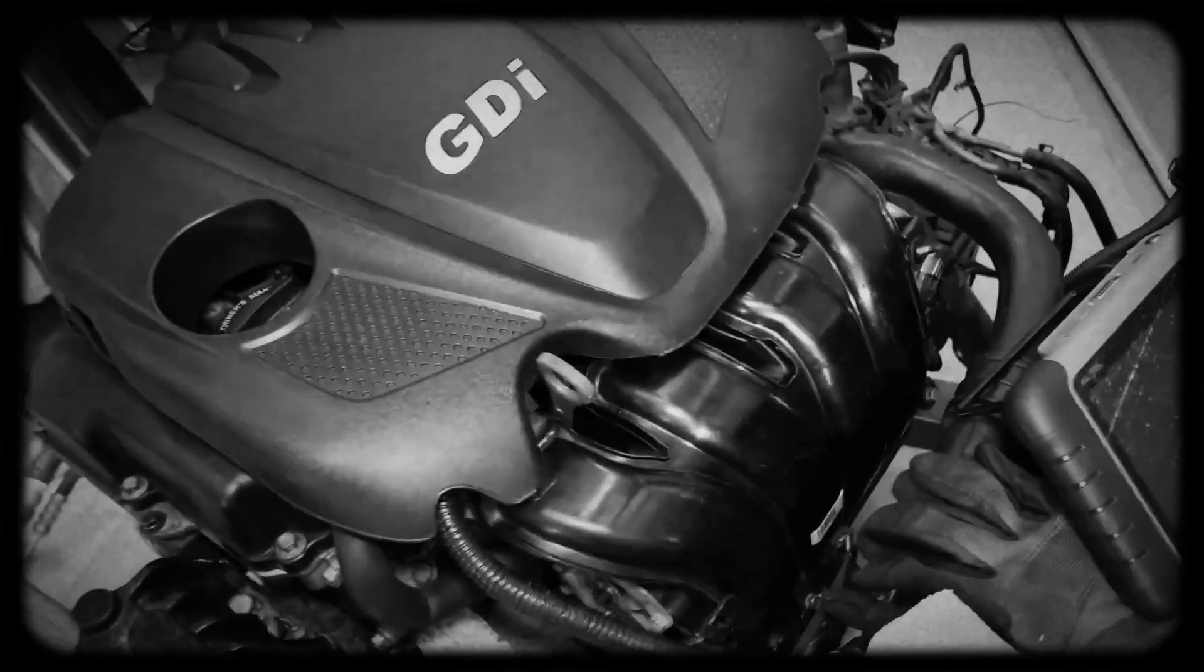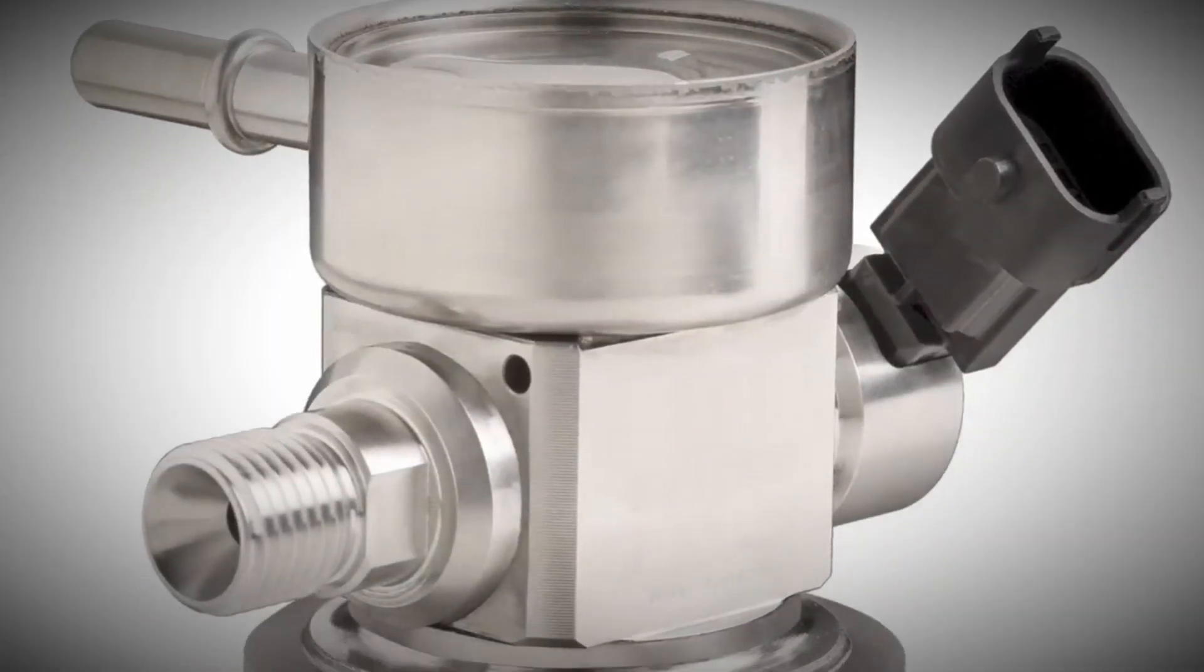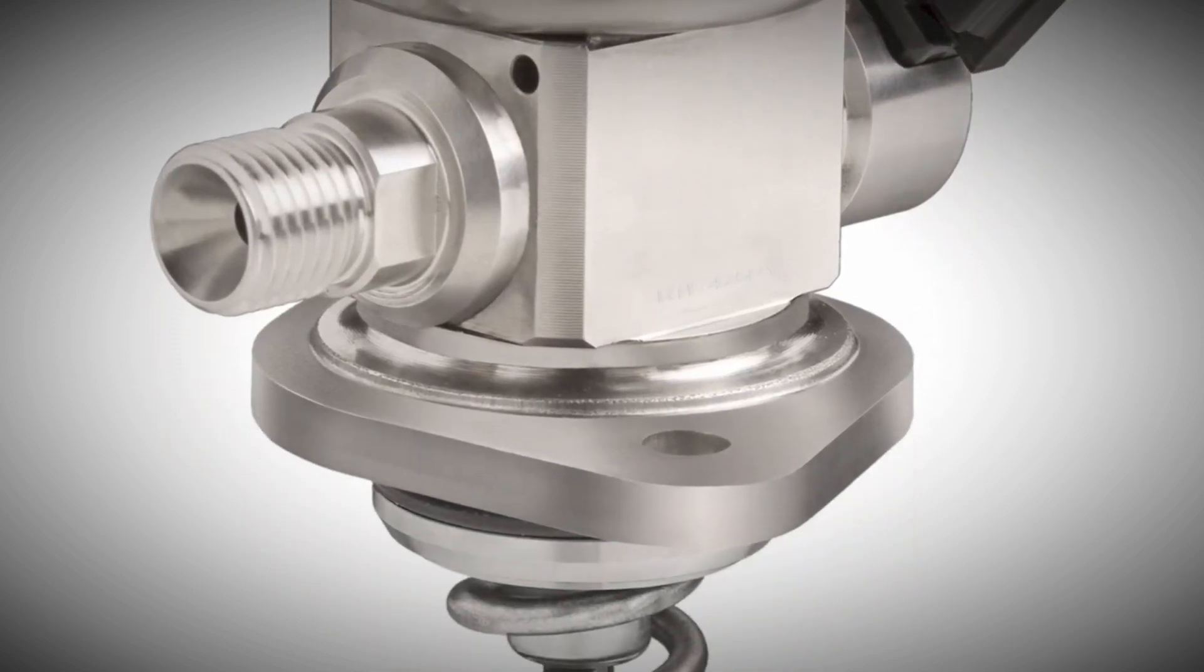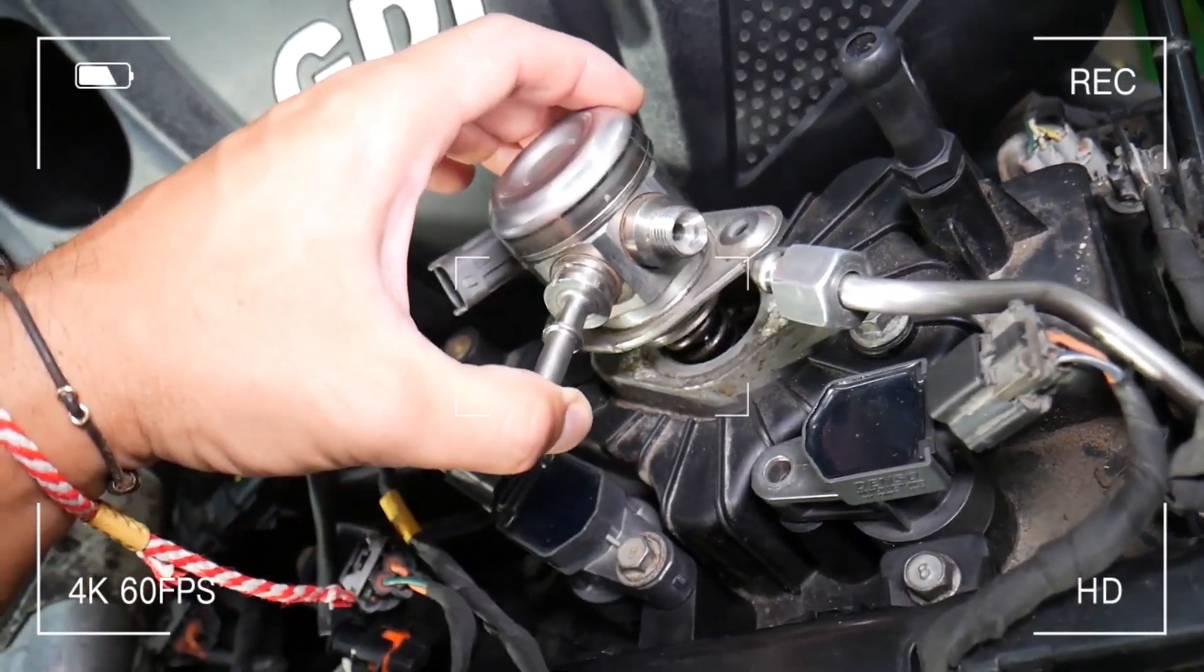Most 2.4 Theta units employ multipoint injection, but GDI variants spray fuel directly into the chamber using a cam-driven high-pressure pump mounted on the exhaust cam's four-lobe extension. Direct injection boosts power,